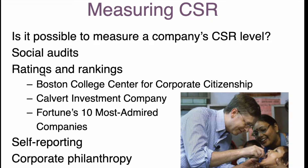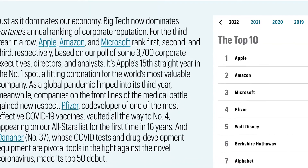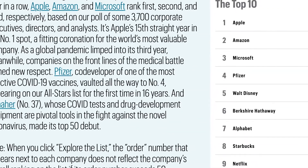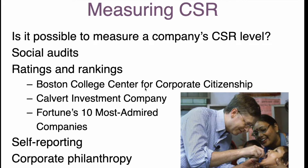There are some ratings and rankings related to CSR. One is the Boston College Center for Corporate Citizenship, which has some kind of assessment. There is also the Calvert Investment Company that does some measurement. But the most popular is probably Fortune's 10 Most Admired Companies — a 2022 list that includes Amazon, Apple, Starbucks, and Netflix. These are some ways to understand or assess CSR, though it's a very complex thing.